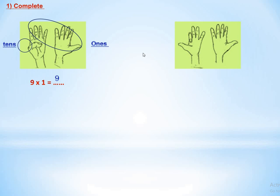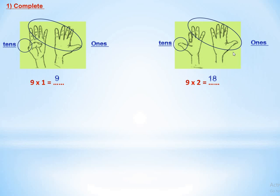Next, fold the second finger — this is 9 times 2. Don't forget to start from the left. How many fingers before this finger? One — so we put 1 in the tens place. How many fingers after? 1, 2, 3, 4, 5, 6, 7, 8 — eight in the ones place and one in the tens place. So the product is 18.